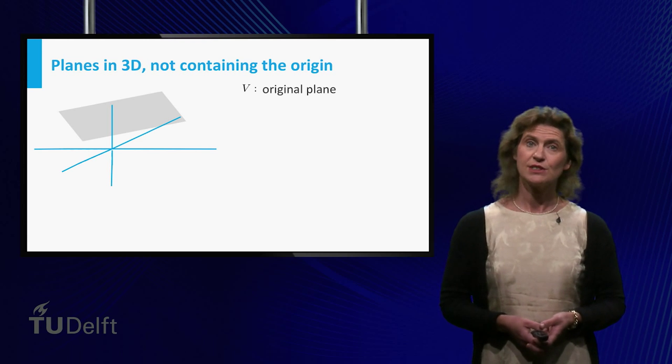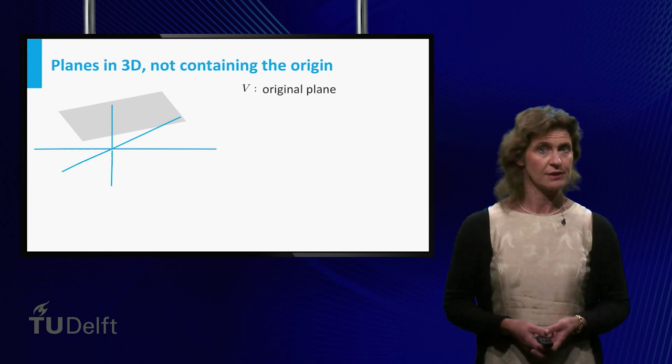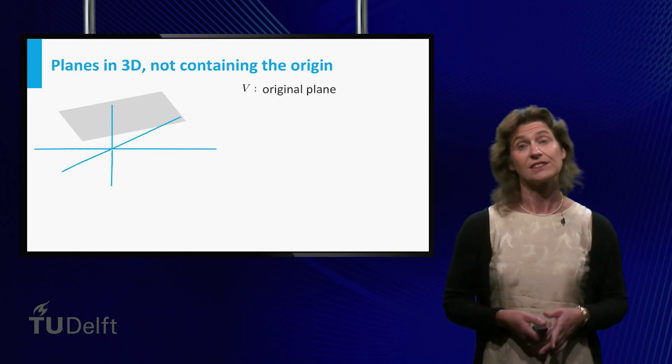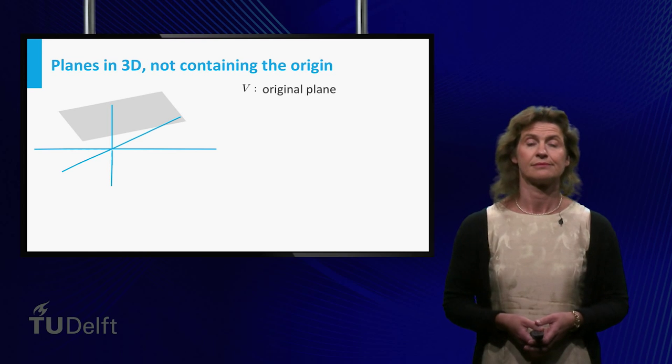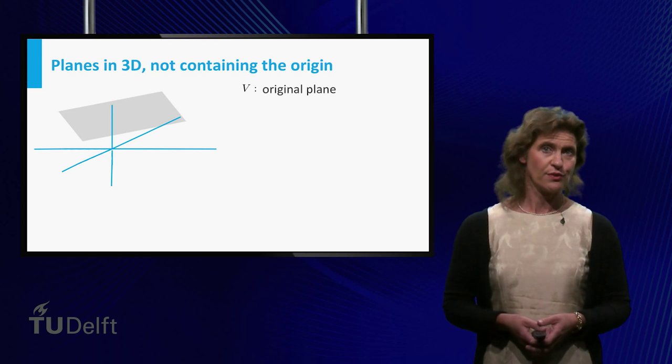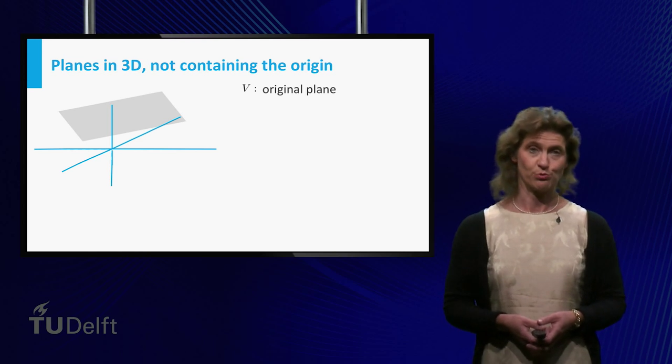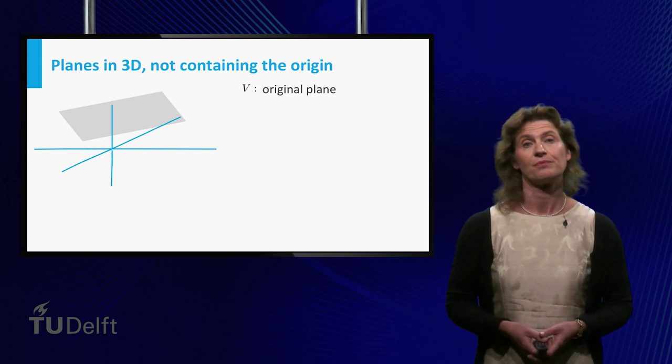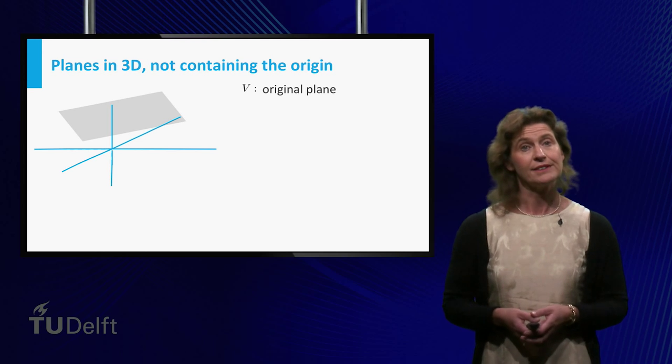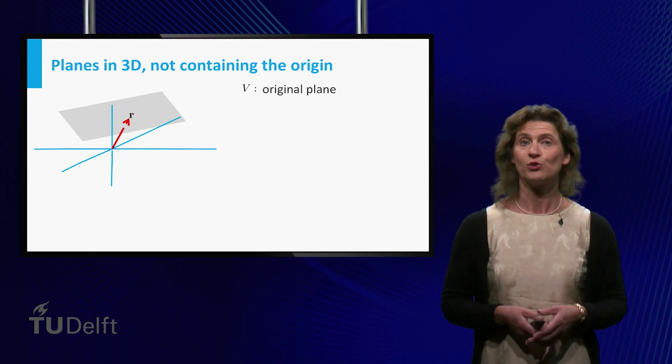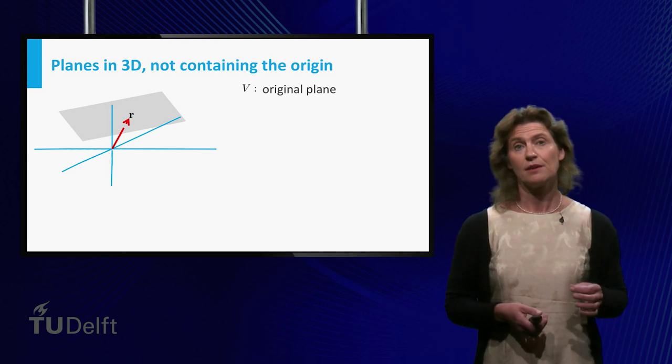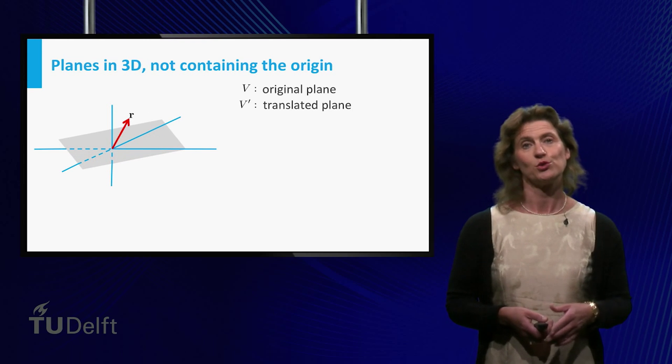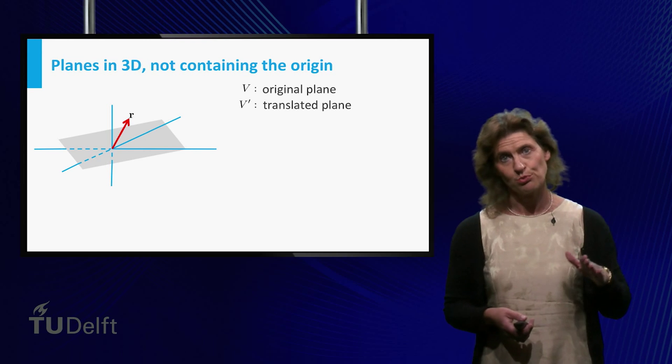Now, what to do if the origin is not contained in the plane we wish to represent? In this situation you cannot simply follow the previous procedure, because the points in the plane are not endpoints of vectors in the plane. But let's see how we can modify it slightly to find a solution to the problem. Let's denote the vectors in the plane by u. Now, pick a point in the plane and denote the vector with its endpoint by r.